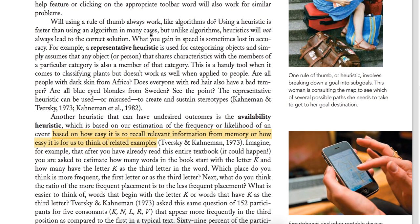You can see there are types of heuristics. The first is the representative heuristic. Representative heuristic means something that you've seen before — you put a new thing in the category of it and make a solution. It means categorizing objects: you simply assume any object or person that shares characteristics with a member of a particular category is also a member of that category. This is a handy tool when it comes to classifying things based on previous experience.